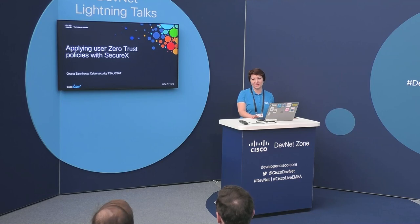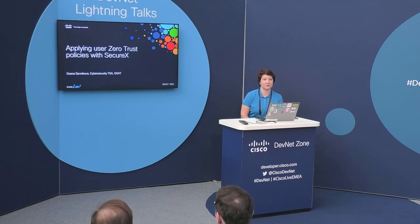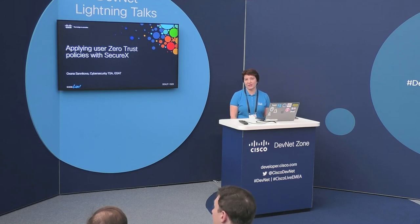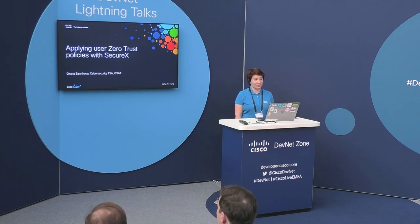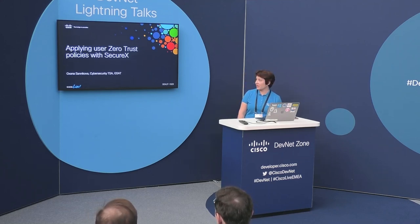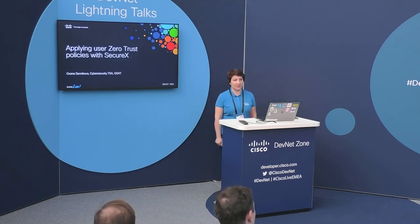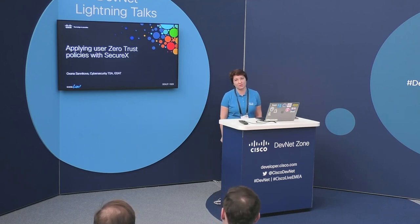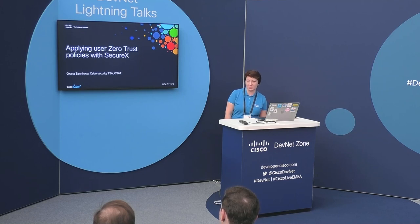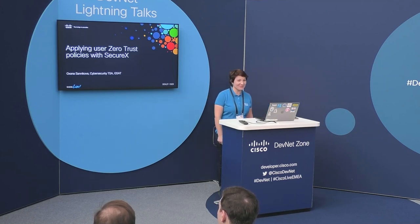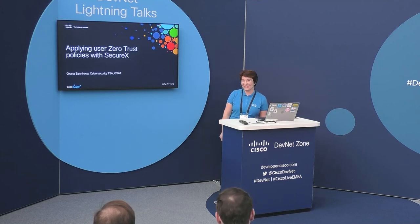Good morning, everyone. Welcome to Lightning Talk, DevNet Lightning Talk, session number 1929. We are going to talk about applying user zero trust policies with SecureX and APIs. My name is Oksana Sednikova. I'm a cybersecurity technical solutions architect on the global security architecture team.